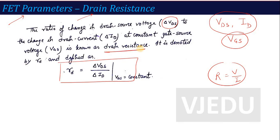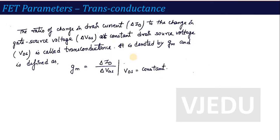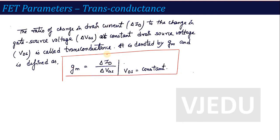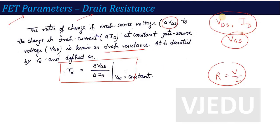The second parameter, which we have already seen in the last lecture, is transconductance. It is defined as the ratio of change in output current with respect to change in input voltage — which is gate-to-source voltage — when the output-side voltage VDS is constant. This is another parameter of FET, denoted as del ID over del VGS. To remember: VDS divided by ID gives drain resistance, and ID divided by VGS gives transconductance — the opposite of resistance.